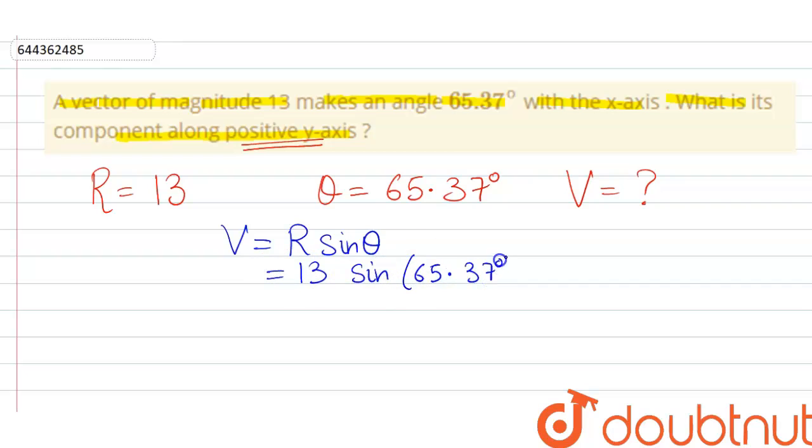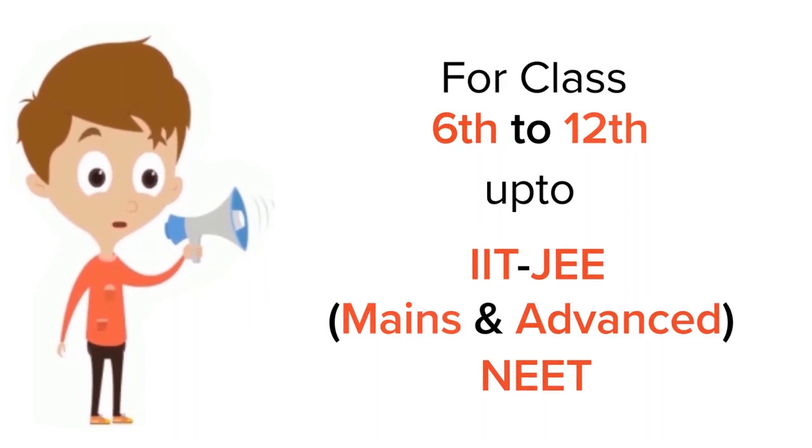Now 13 multiplied by 0.91, that comes out to be 11.82. I hope that answers your question. Thank you! For class 6 to 12, IIT-JEE and NEET level, trusted by more than 5 crore students, download Doubtnet app today.